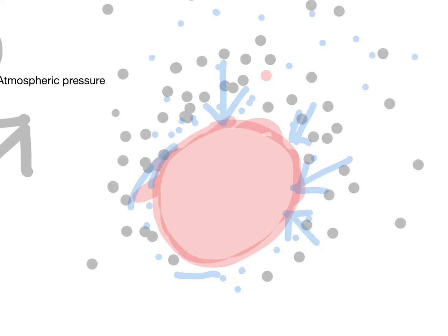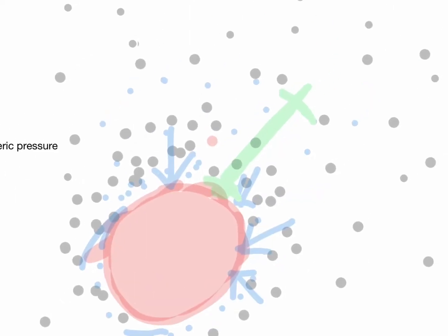As we go up, air molecule density decreases. A molecule at the surface feels the pressure from the weight of all the molecules above it — layer after layer. So the molecule at the bottom has greater atmospheric pressure, while a molecule higher up feels less pressure because there are fewer molecules above it.